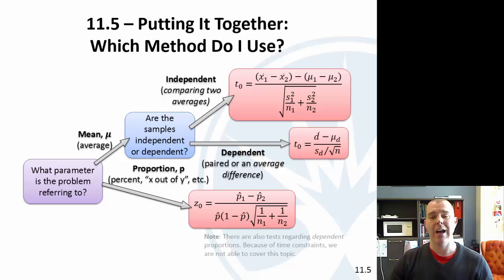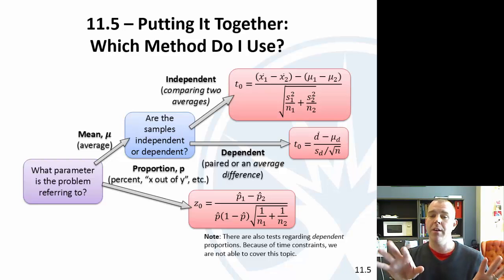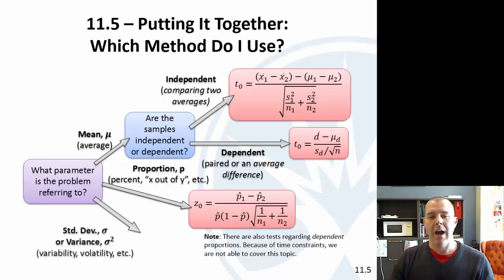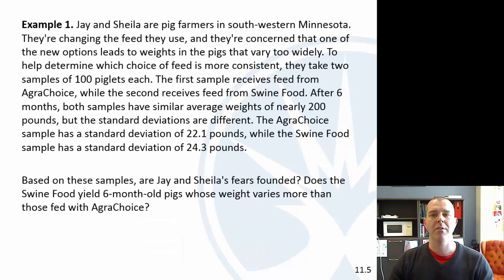Proportion, here I should note here, there is a test regarding dependent proportions. Just because of time constraints, we're not going to have time to do that one. So maybe we should note that all the examples we did were when we were comparing two proportions and the samples were independent. And then we have our standard deviation and we use that f-statistic. So let's rip through some examples here.